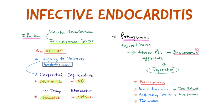The pathogenesis of infective endocarditis is as follows: once the valves are injured, they form a fibrin-platelet aggregate. After bacteremia occurs in the body, it leads to vegetation formation. Causes of bacteremia include dental procedures like tooth extraction, respiratory tract procedures like tonsillectomy, or traumatic causes. This combined with the fibrin-platelet aggregate leads to vegetation formation.